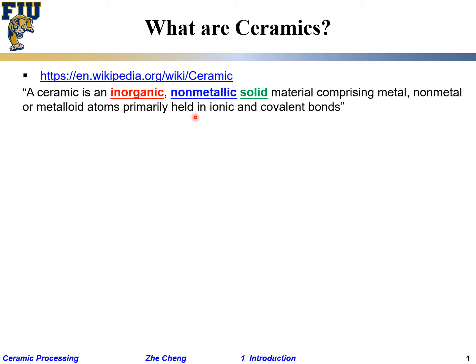Keep this in mind: inorganic, non-metallic solid material comprising metal, non-metal, or metalloid elements, primarily held together by ionic or covalent bonding — or a mixture of both. Not metallic bonding, not secondary bonding. That's the Wikipedia definition of ceramics.